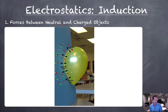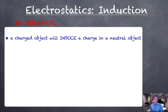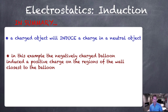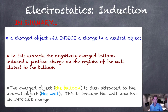The word 'induced' means to make happen or to make happen indirectly. So this attractive force would be an induced attractive force between the negative balloon and the closest region of the wall, where there is an induced positive charge. In summary, a charged object will induce a charge in a neutral object. The negatively charged balloon induced a positive charge on the region of the wall closest to it, and the charged object — the balloon — is then attracted to the neutral object — the wall — because the wall now has an induced charge.